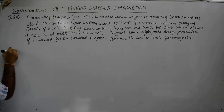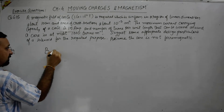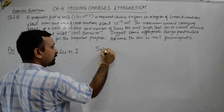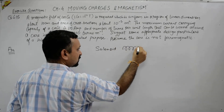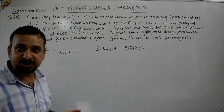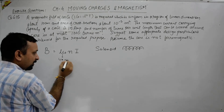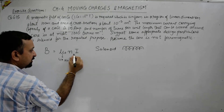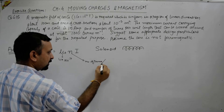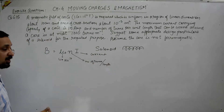First, we will find out the value of the magnetic field. We write the formula of magnetic field for a solenoid: B is equal to mu zero n i. In the case of a solenoid, the magnetic field along the axis is fairly constant, and its value is mu zero n i. Here mu zero is the magnetic permeability with value 4 pi into 10 to the power minus 7, n is the number of turns per unit length, and i is the current. The product of these three gives the magnetic field.